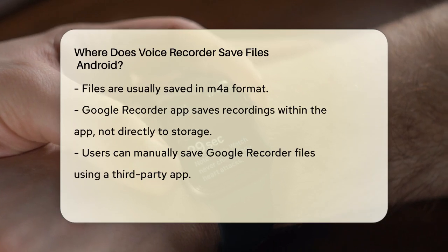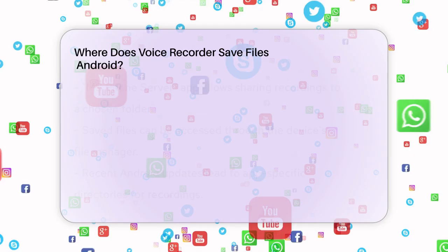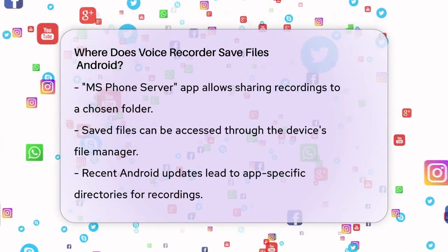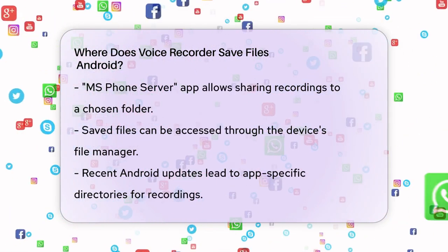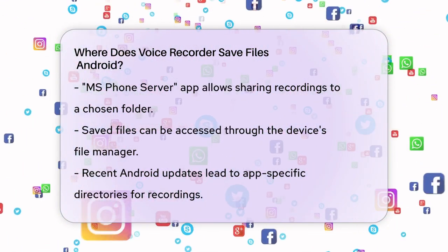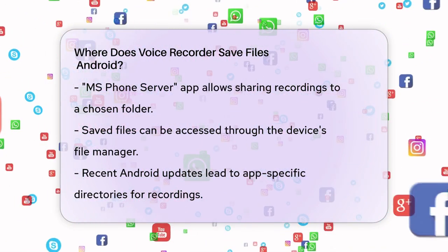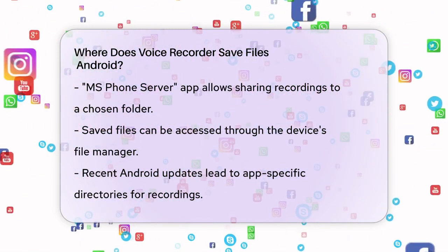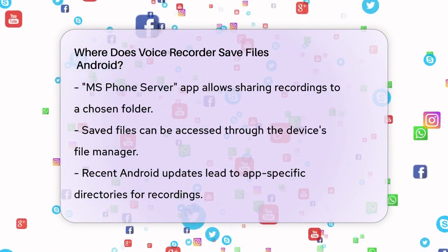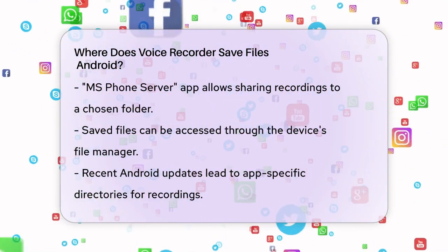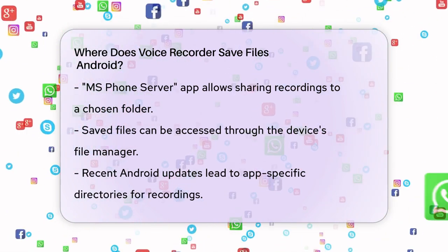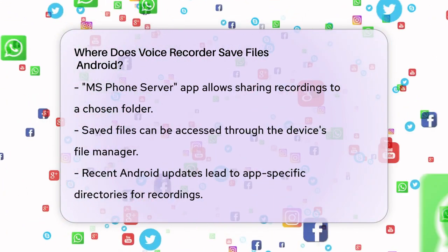To save Google Recorder files to your internal storage, you need to use a third-party app like MS Phone Server. After installing this app, you can share the recording from the Google Recorder app and select MS Phone Server to save it to a folder of your choice on your device. You can then find these files in your file manager under the folder you specified.